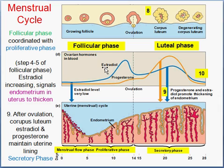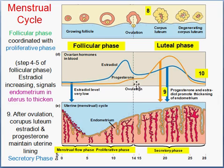Estradiol — there are two estrogens: estradiol and estriol. Both are sex hormones. Estrogens are primarily responsible, under the stimulation of FSH and LH, for the development and maintenance of secondary female sexual characteristics. Progesterone is involved in the development and maintenance — not degeneration — of the endometrial lining.